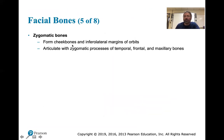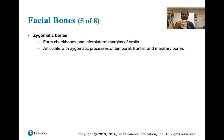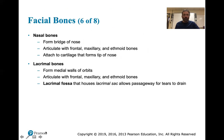The zygomatic bones form the cheekbones and inferior margins of the orbits. The nasal bones form the bridge of the nose and are unique - not any of us have the same exact nose structure. Ears are also very different from person to person.